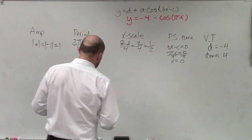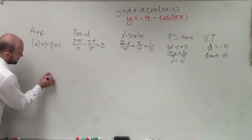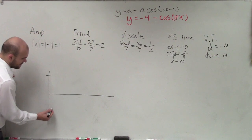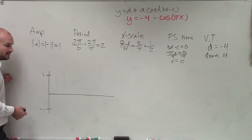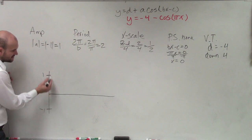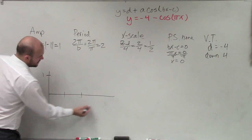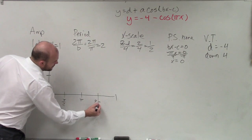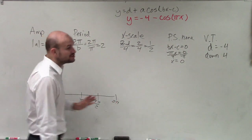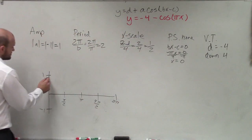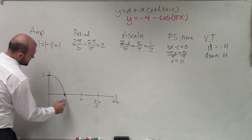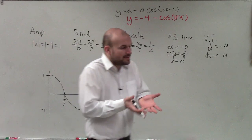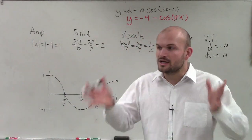Now, once we have this, how can we go ahead and graph? Let me show you what one period of the cosine graph looks like. Cosine starts at 1 — one period of it looks like this. We have π halves, π, 3π over 2, and 2π. The maximum is at 0, then it goes to an intercept, then to a minimum, then to an intercept, and then back to a maximum. That is the parent graph of cosine — just one period of it.